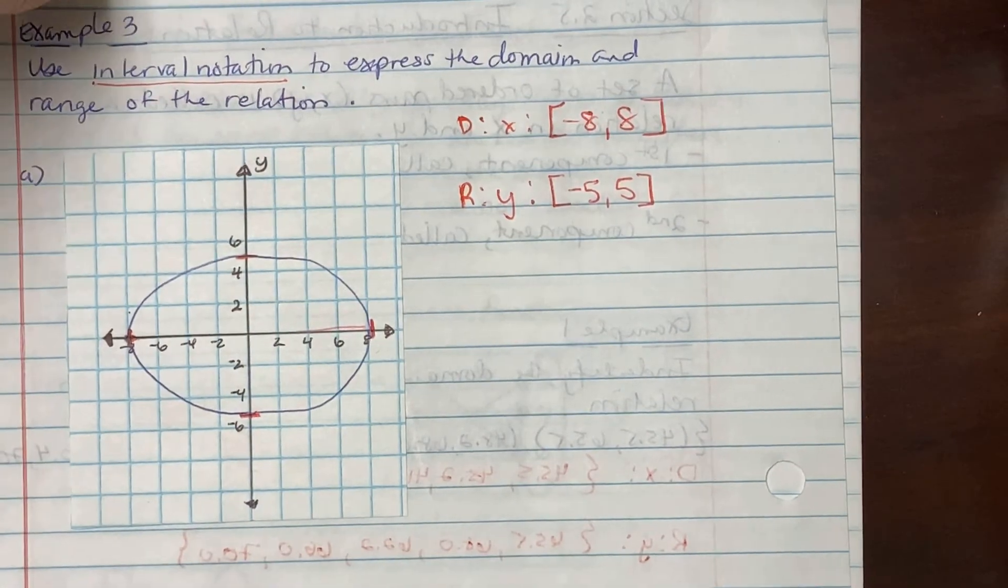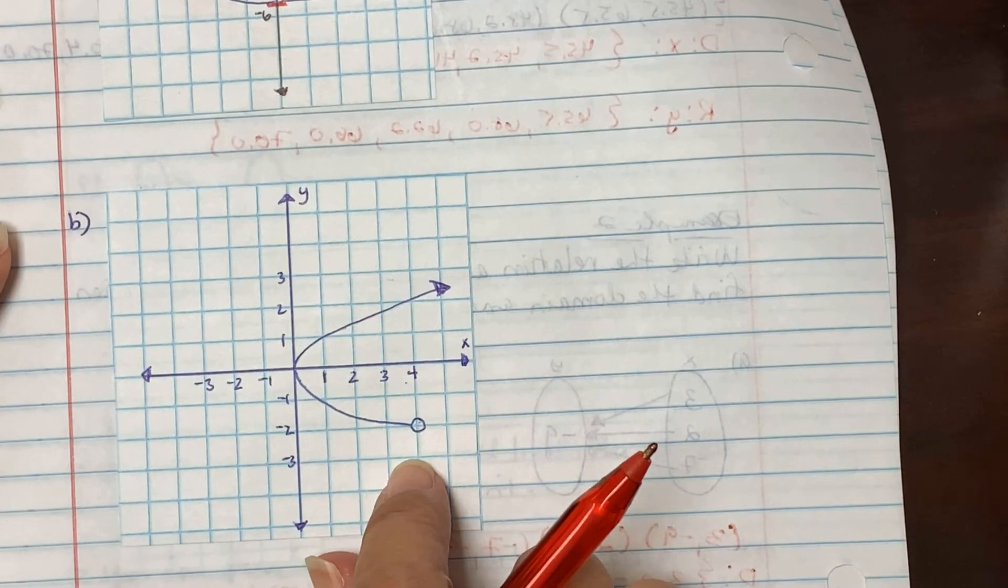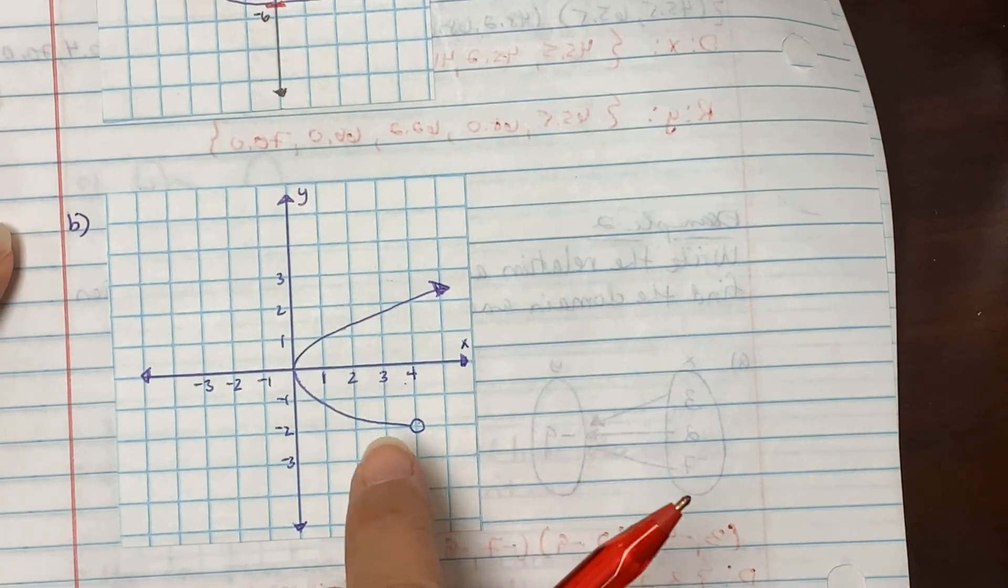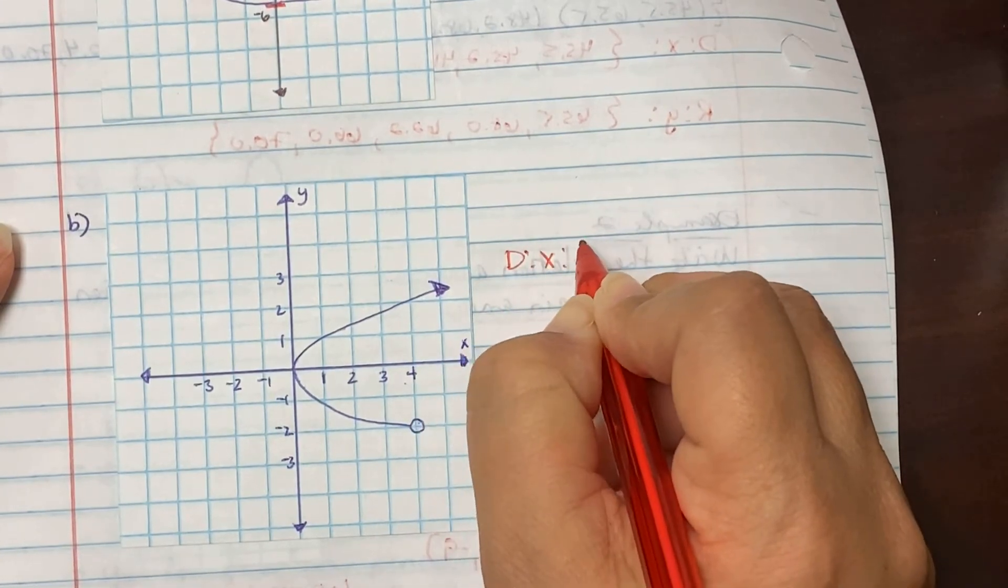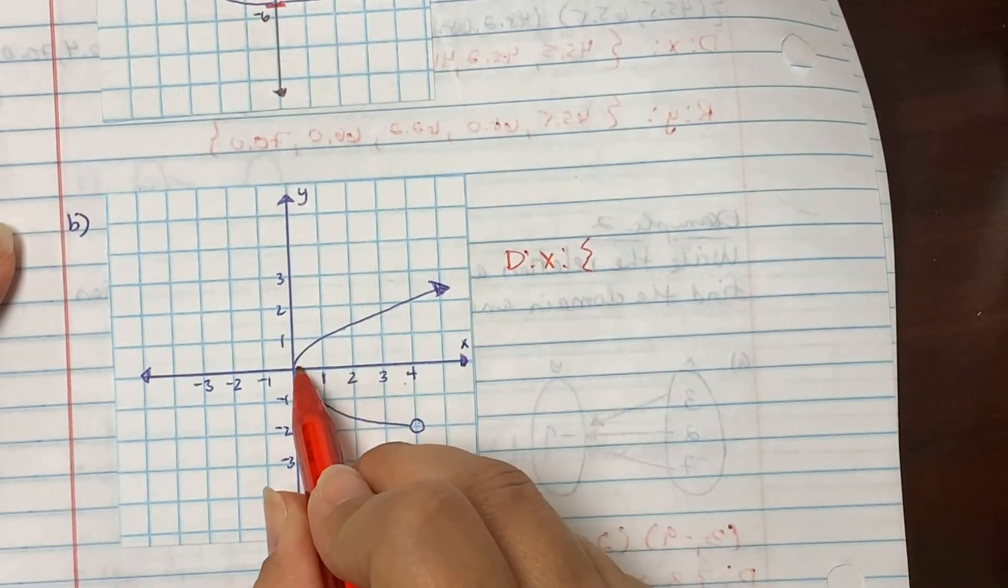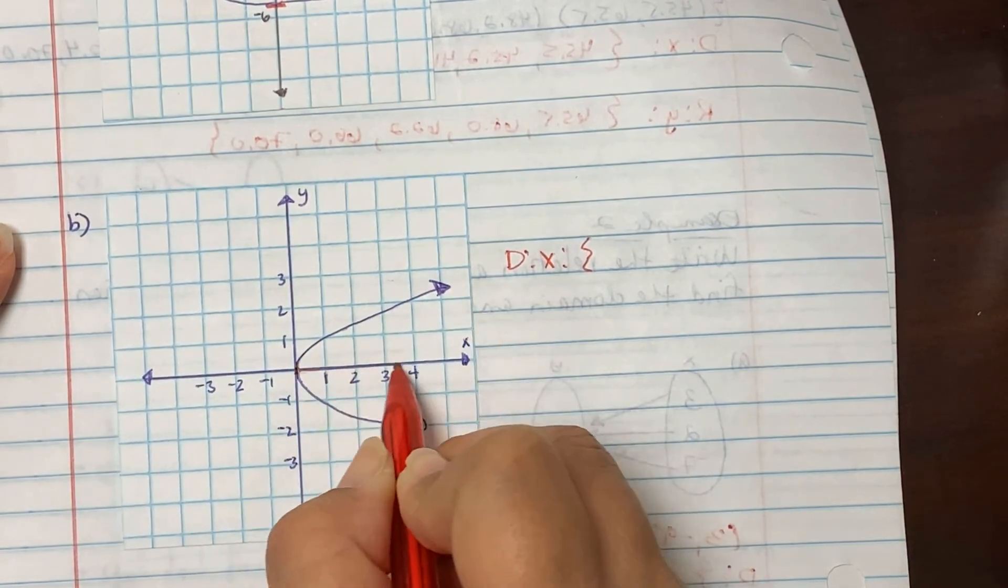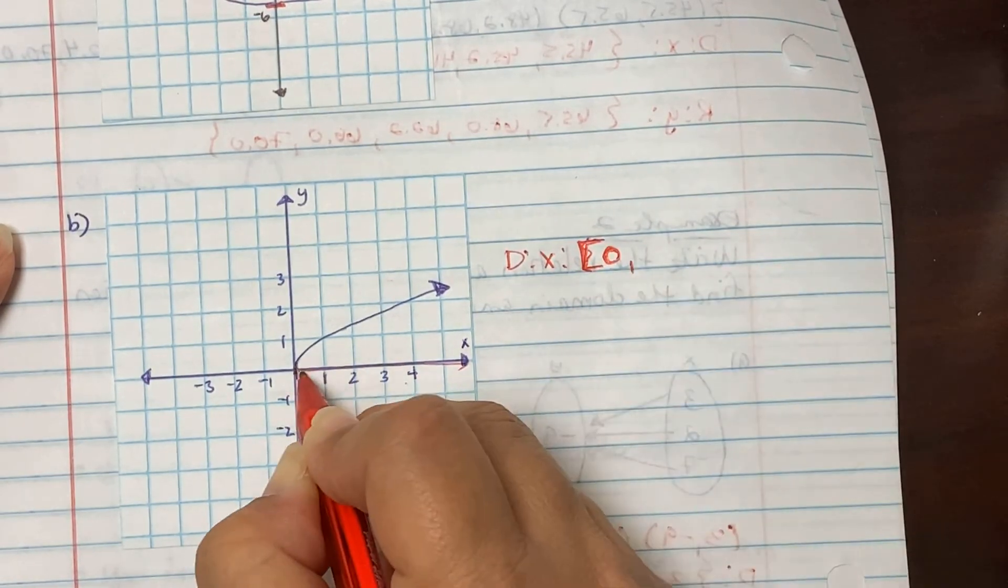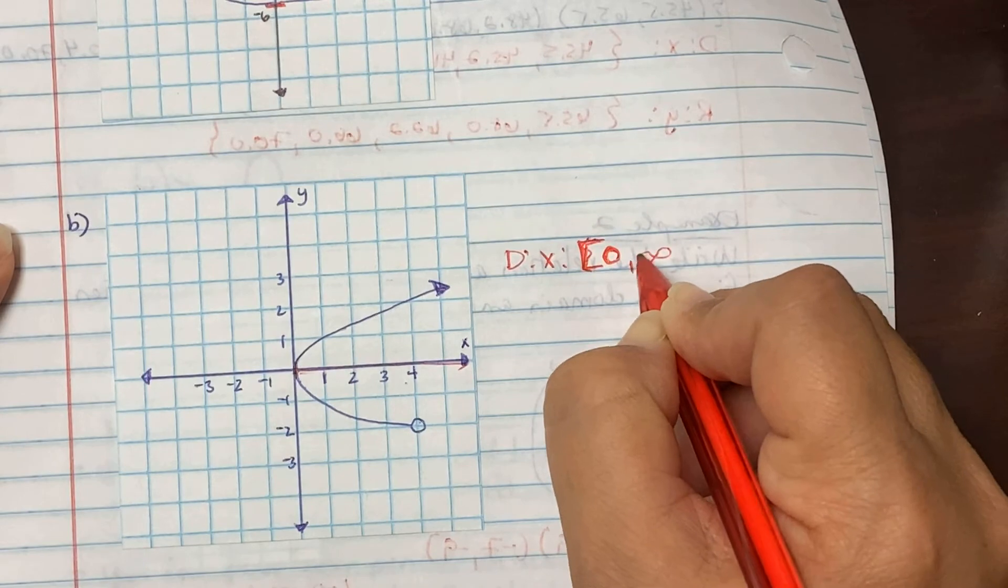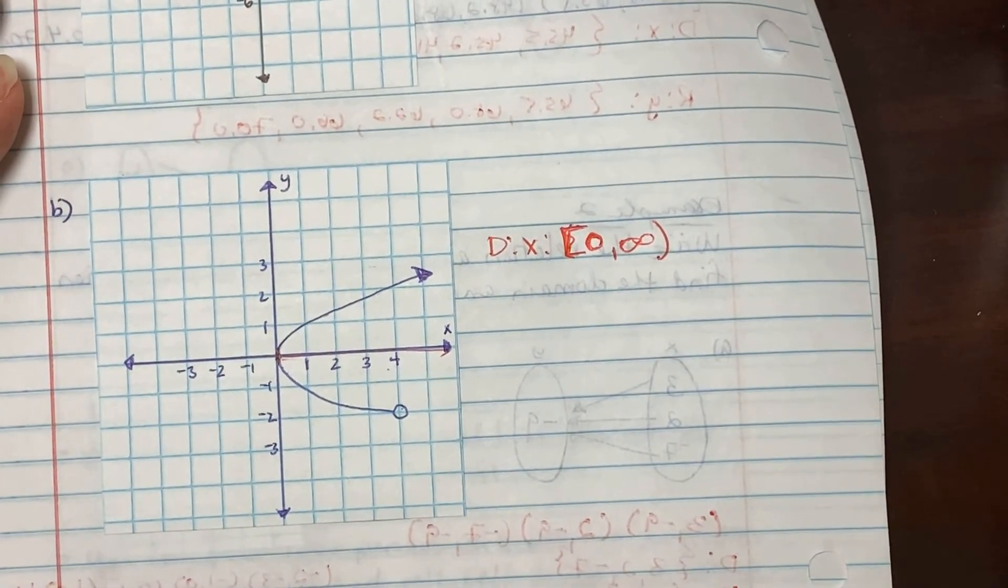On example B of part 3, we have a parabola opening to the right. When we look at our domain and range, our domains are our x's. When we look here, it's starting at 0, but the arrow is going to the right. So we're bracketing at 0, but since the arrow is going to the right, it's going to infinity, [0, ∞).